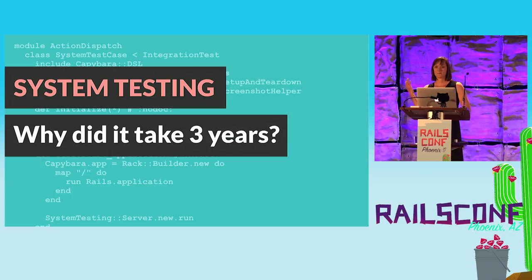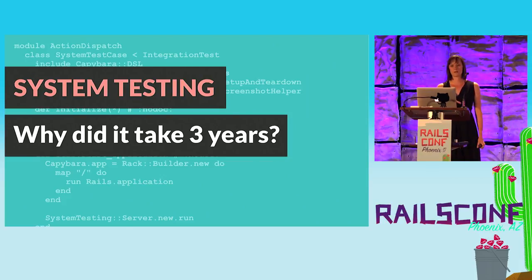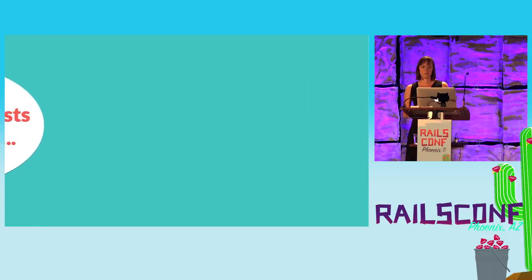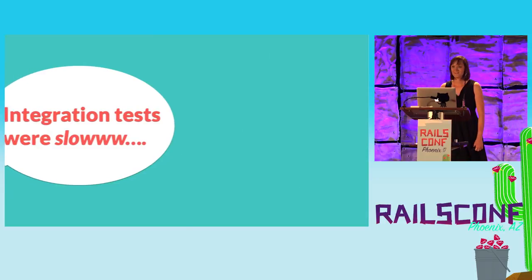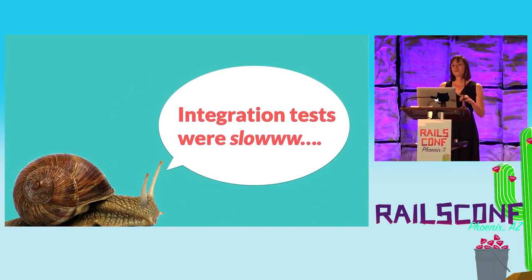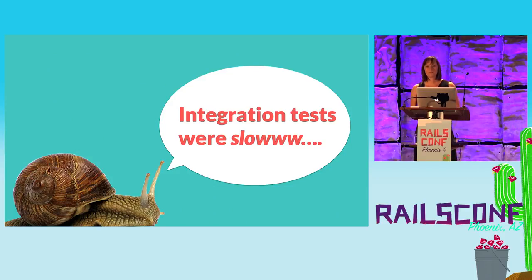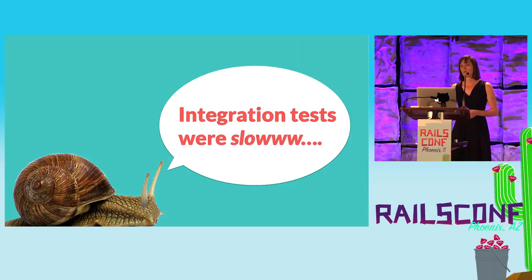You may be wondering why it took three years to build system tests — that didn't seem that complicated. One reason is that system tests needed to inherit from integration tests to access URL helpers that already existed, but integration tests were really slow. The performance of them was abysmal. There was no way the Rails team could push system testing through integration tests without major backlash — nobody wants their test suite to go from five minutes to ten minutes. So in 2015, I worked with Aaron Patterson on speeding up integration test performance. Once we got integration tests to be marginally slower than controller tests, system tests could inherit from them.